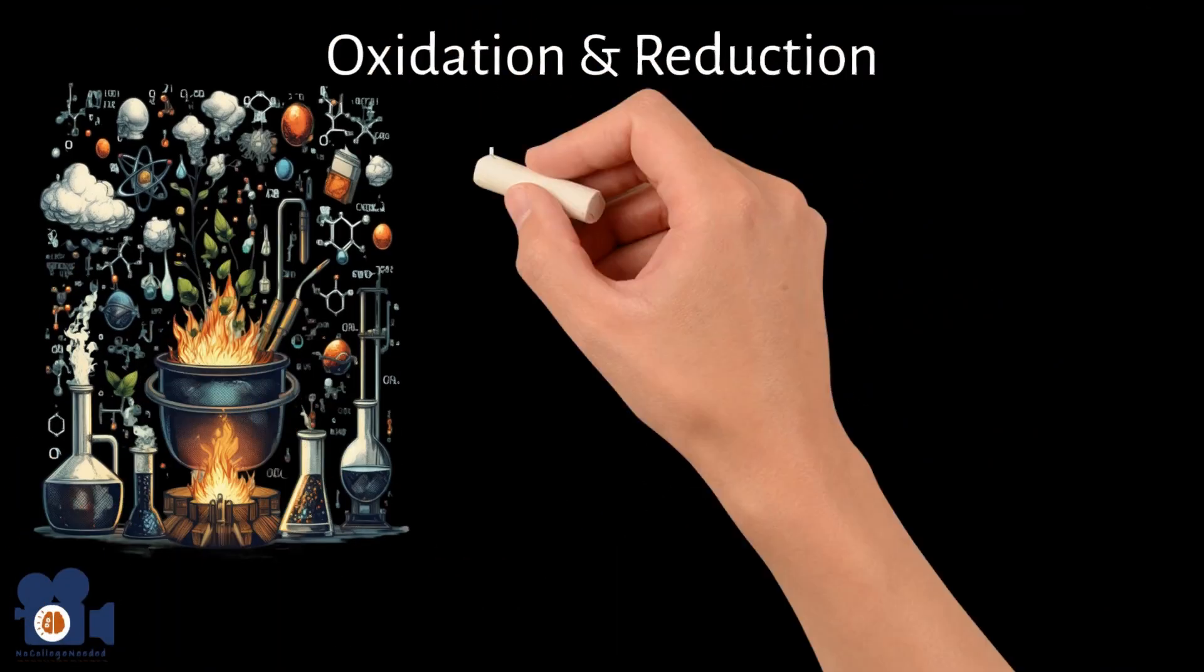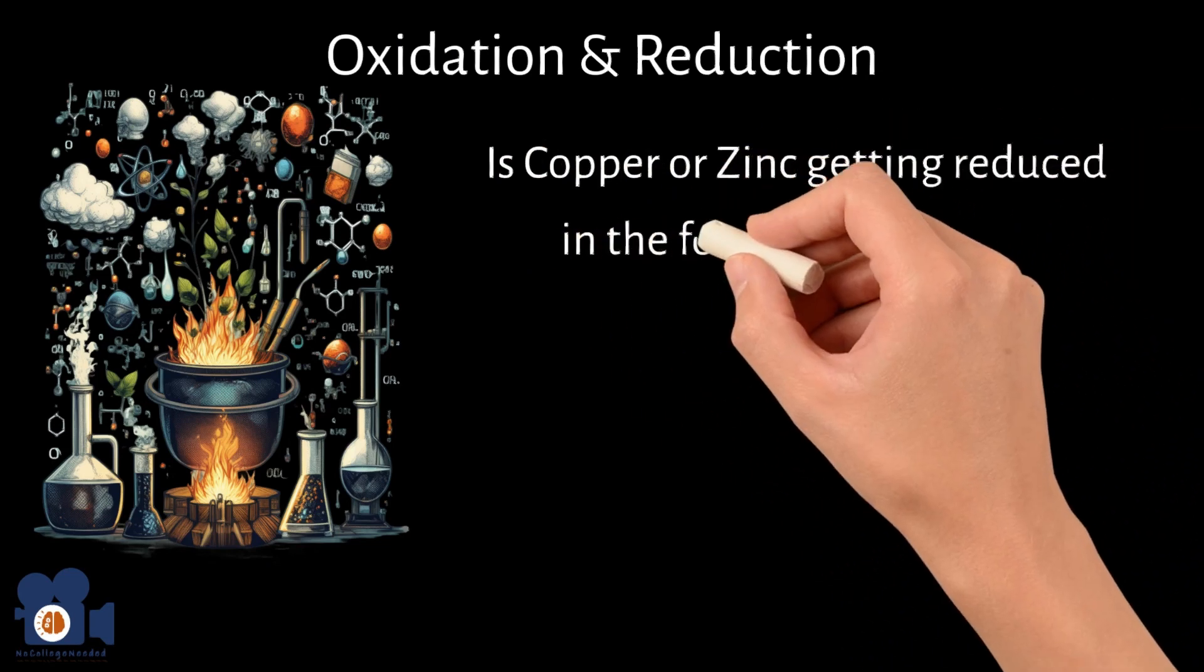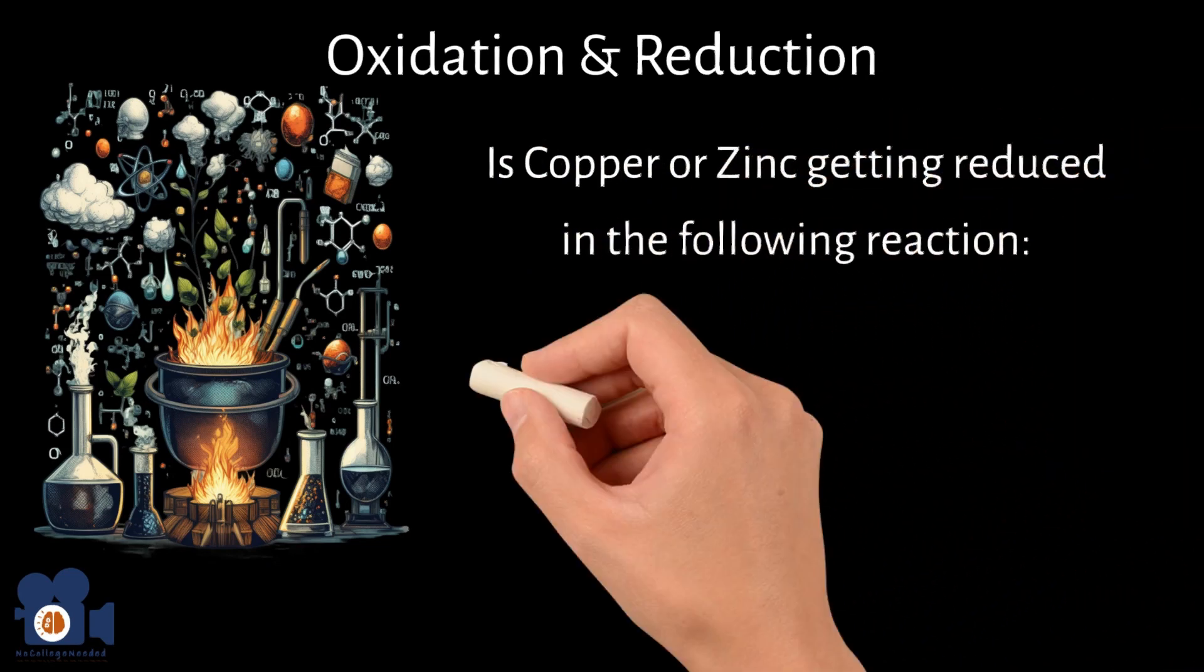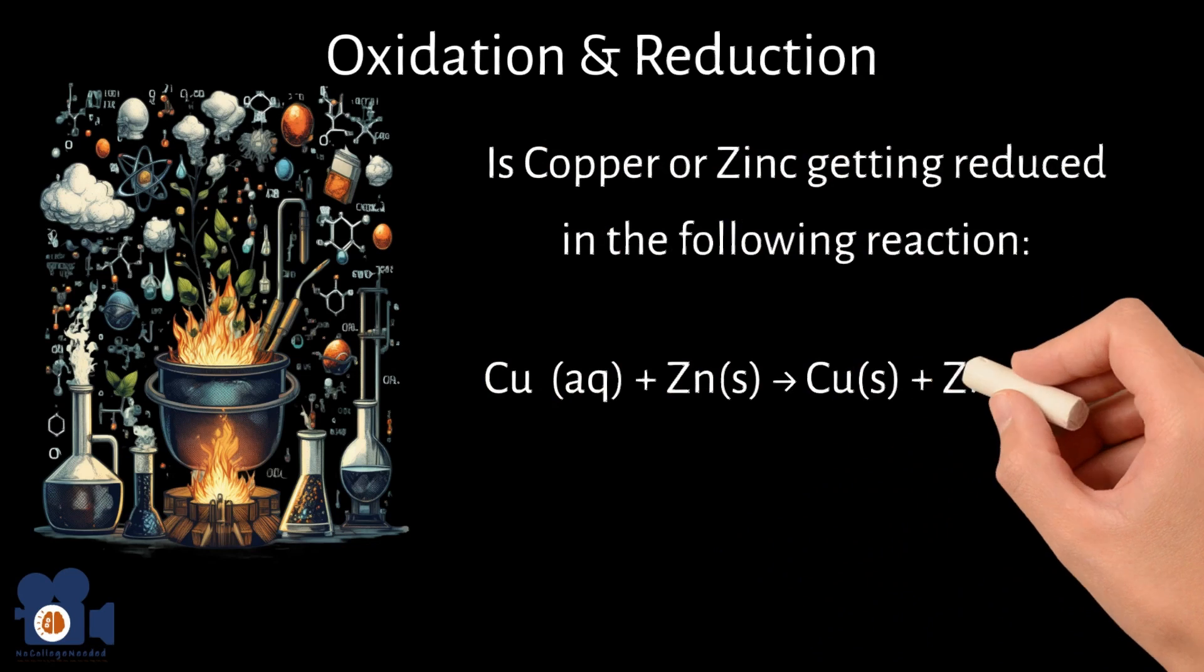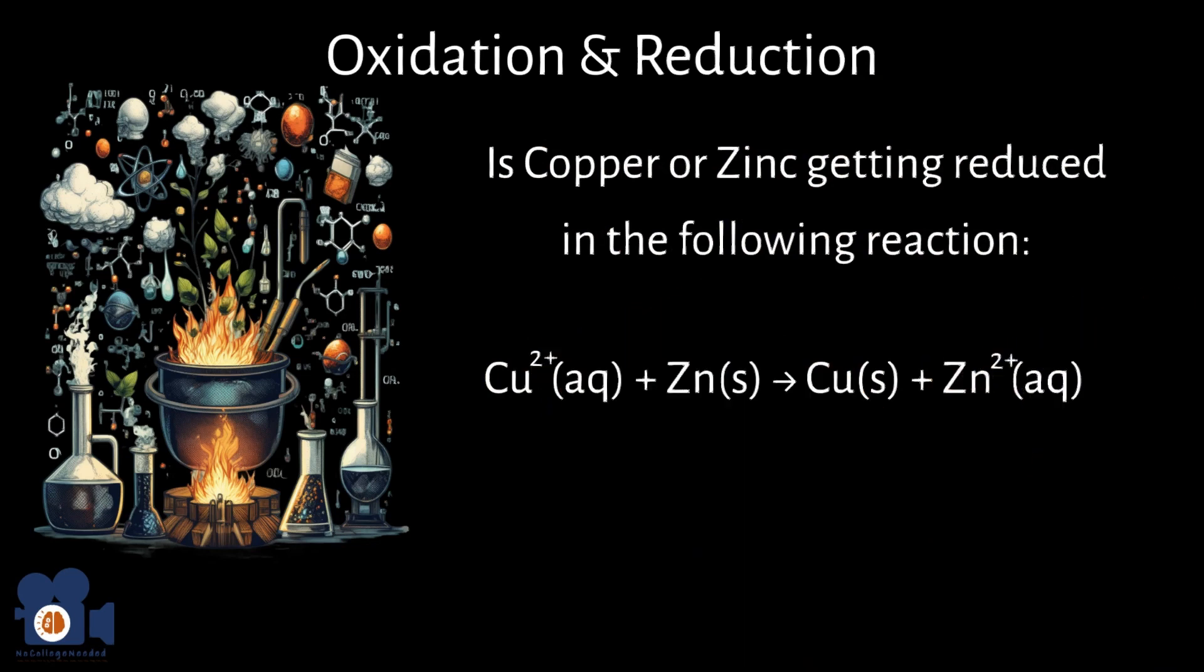Unit 4.4 explains oxidation and reduction reactions. For example, is copper or zinc getting reduced in the following reaction: Cu2+ plus Zn going to Cu plus Zn2+.